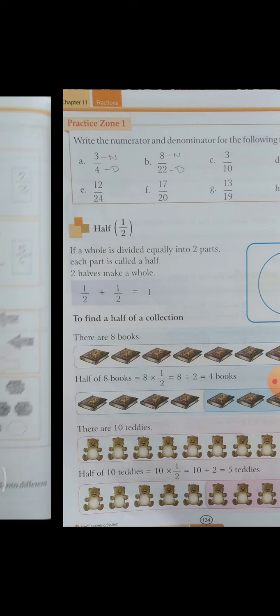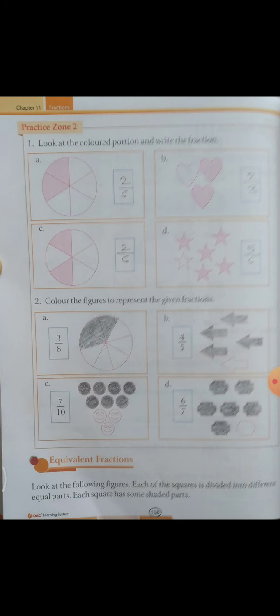Now come to Practice Zone 2. Practice Zone 2 ke andar: look at the colored portion and write the fraction. Colored portion ko dekhna hai aur isko fraction likhna hai. Sabse pehle total number of blocks — circle ke andar kitne hain? 6, aur shaded part kitna hai? 2, toh 2 by 6 is the answer. B part ke andar heart shape bana hua hai — 3 shapes hain, 2 shade hain, toh 2 by 3. C part mein total number of blocks kitne hain? 6, aur shade kitne hain? 2, toh 2 by 6 is the answer.